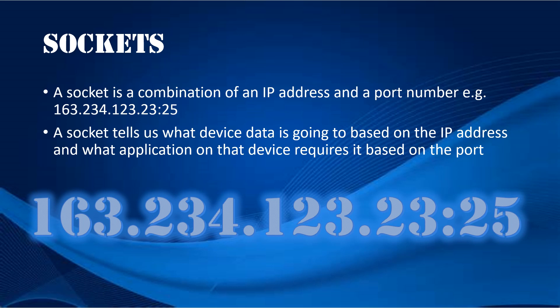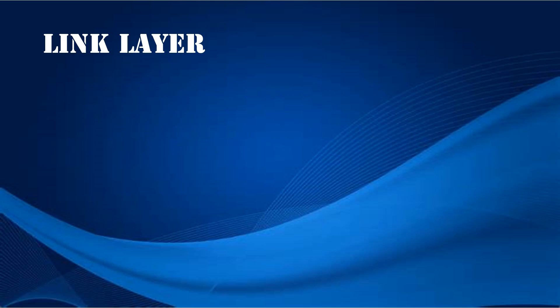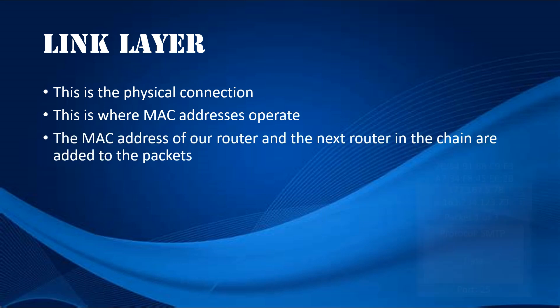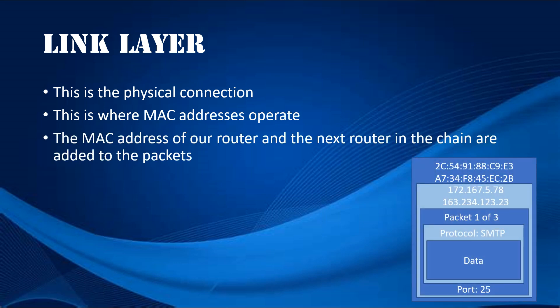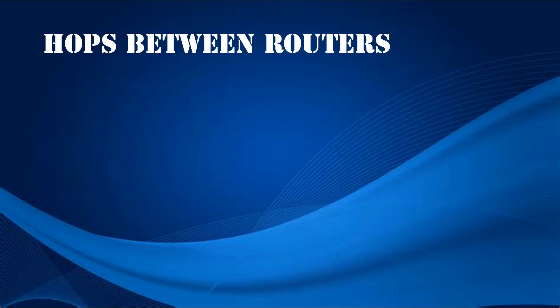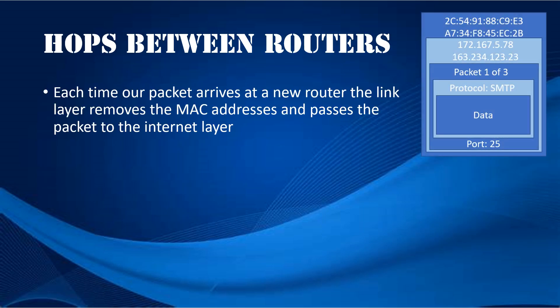The Link Layer refers to the actual physical connection. This is where MAC Addresses operate. The MAC Address of our router and the next router in the chain are added to the packets. At the other end, these are stripped off again by the Link Layer. Each time our packet arrives at a new router, the Link Layer removes the MAC Addresses and passes the packet to the Internet Layer.